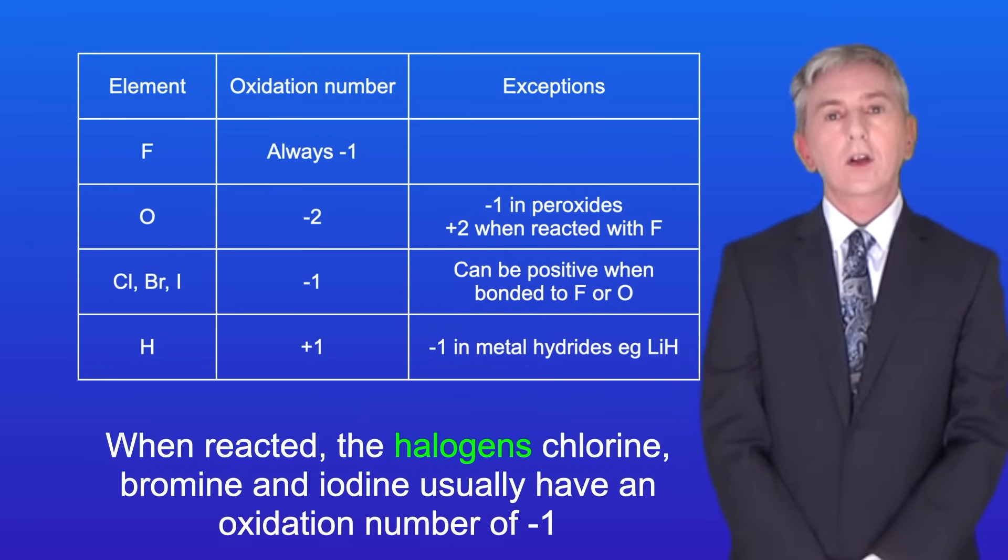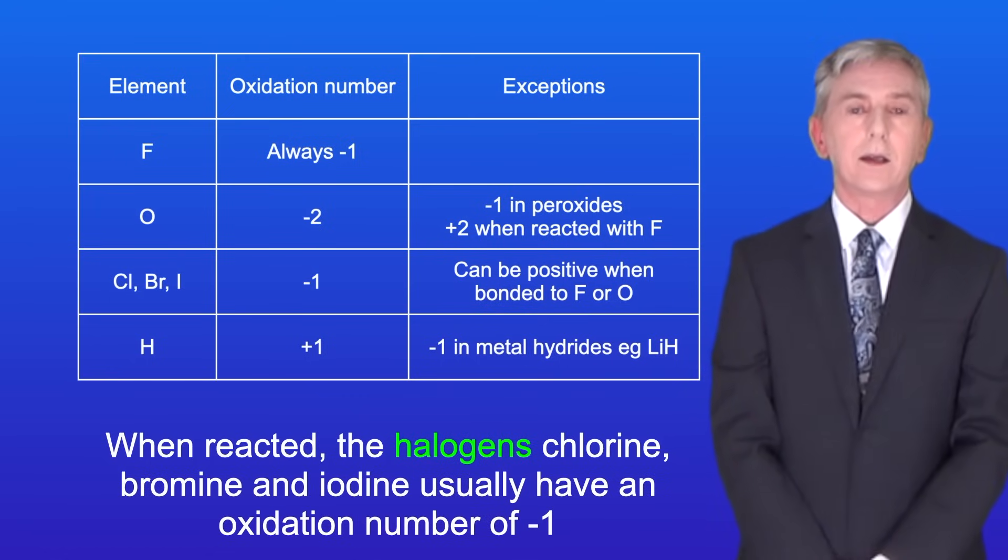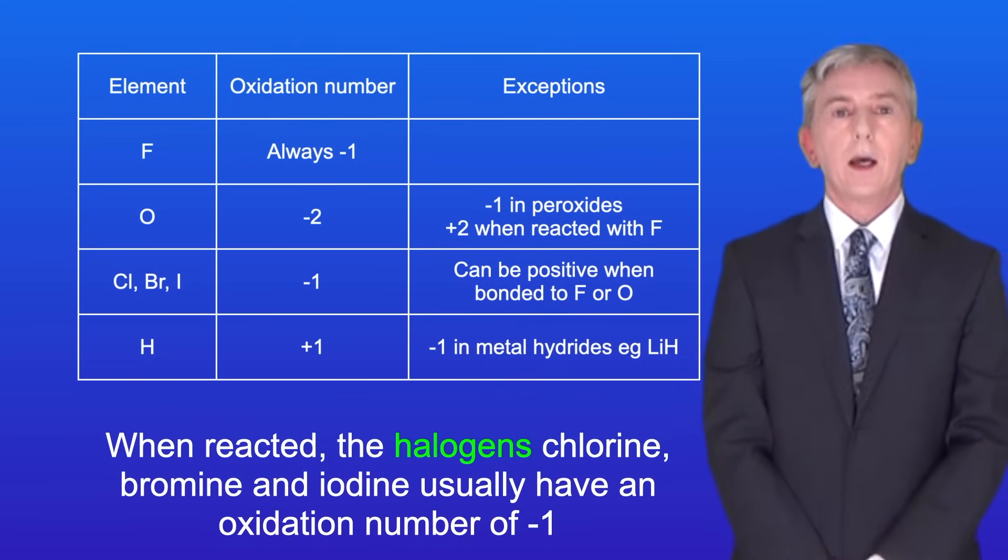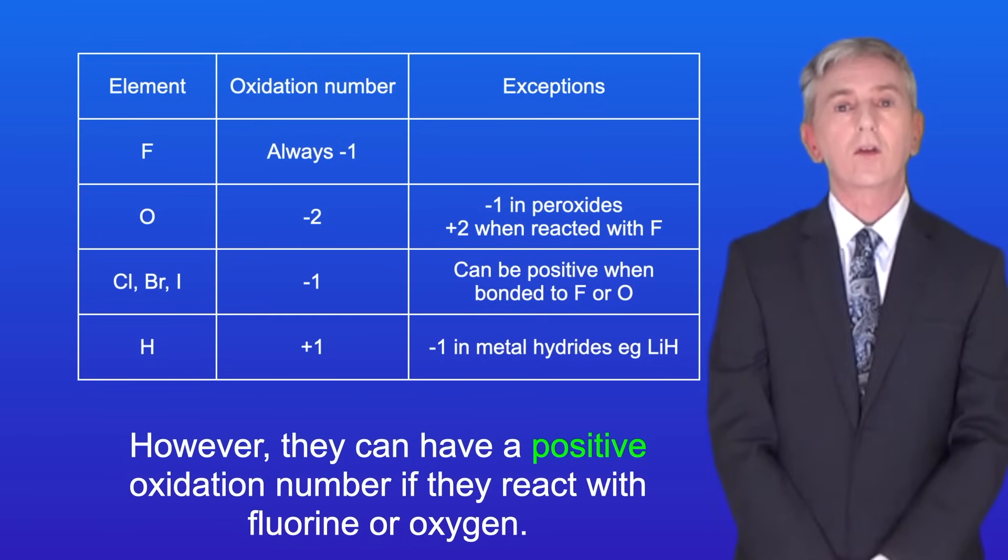When reacted, the halogens chlorine, bromine and iodine usually have an oxidation number of minus one. However, they can have a positive oxidation number if they react with fluorine or oxygen.